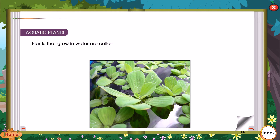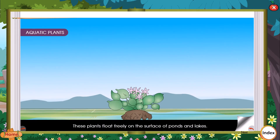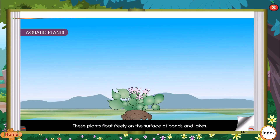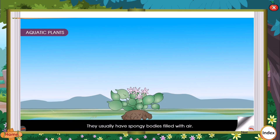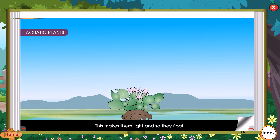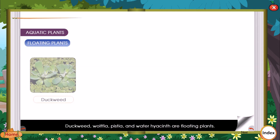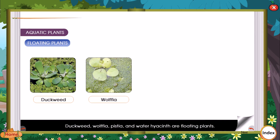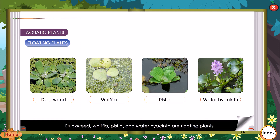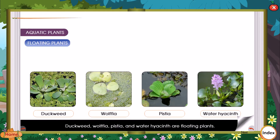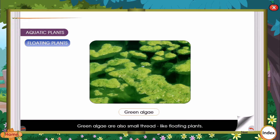Aquatic plants are those that grow in water; they are of three types: floating, fixed, and underwater. Floating plants float freely on the surface of ponds and lakes. They usually have spongy bodies filled with air, which makes them light so they float. Duckweed, wolfia, pistia, and water hyacinth are floating plants. Green algae are also small thread-like floating plants.